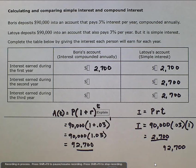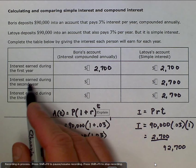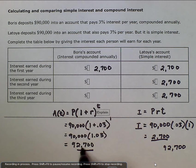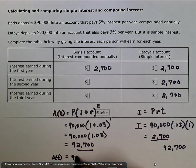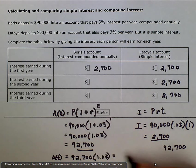Where it changes is after the second year. The second year, we have to consider the new starting amount. So our starting amount would now be, and I'll write it right here. The amount on the second year would be 92,700. And that's going to be multiplied by our same interest, 1.03. That is going to be equal to 95,481.